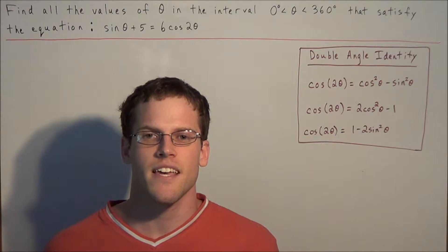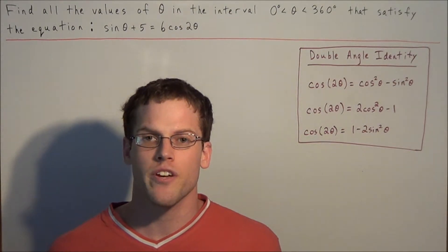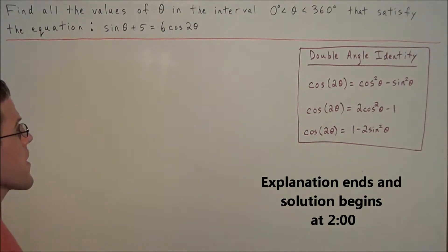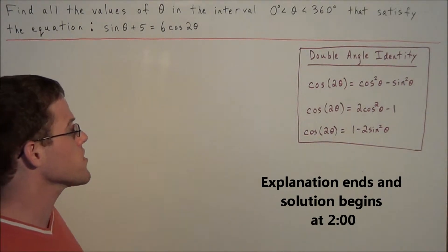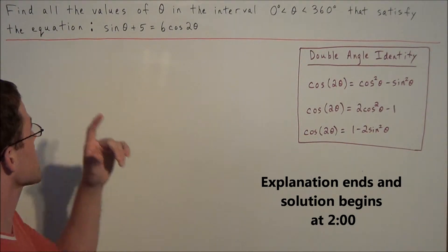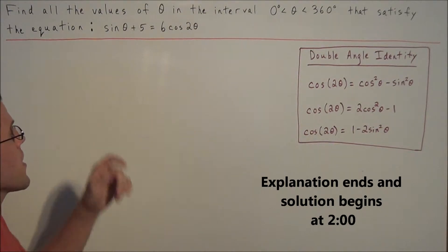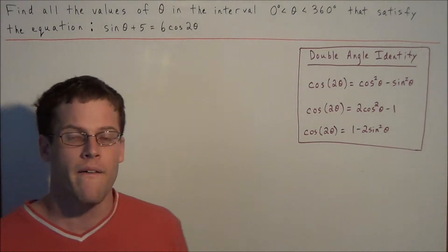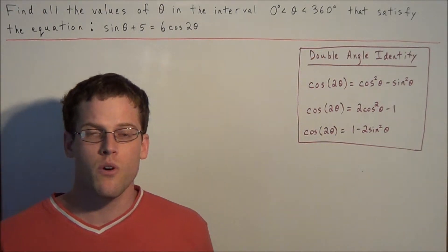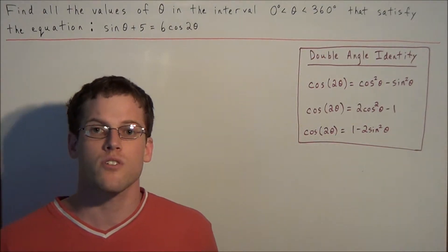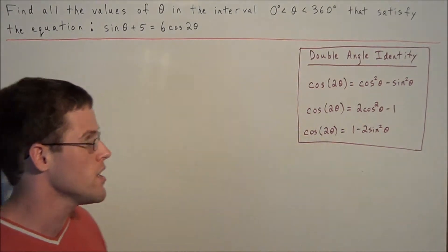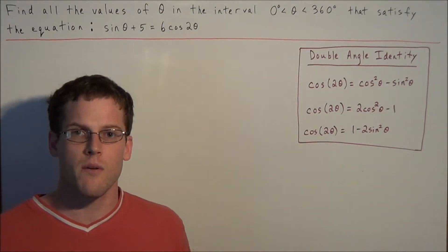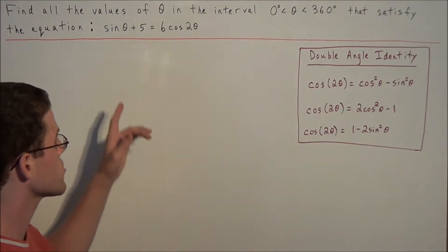Hi, my name is Vincent and today I want to take a look at solving trigonometric equations. We have the problem: find all the values of theta in the interval from 0 degrees to 360 degrees that satisfy the equation sine theta plus 5 is equal to 6 times cosine of 2 theta. This problem is arguably one of the most challenging types you'll come across in high school trigonometry, because it's packed with numerous concepts — almost like a summation of the entire trigonometry curriculum.